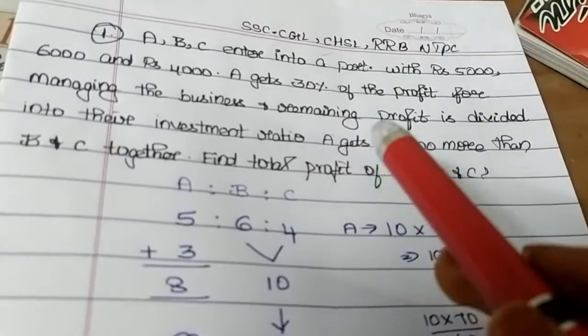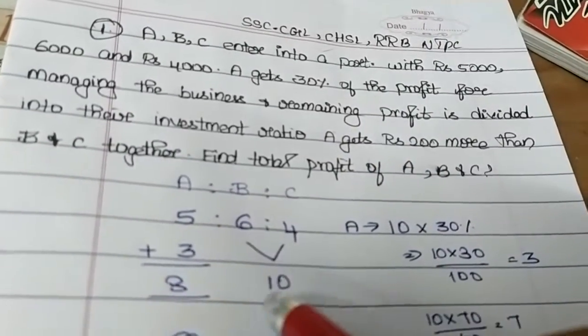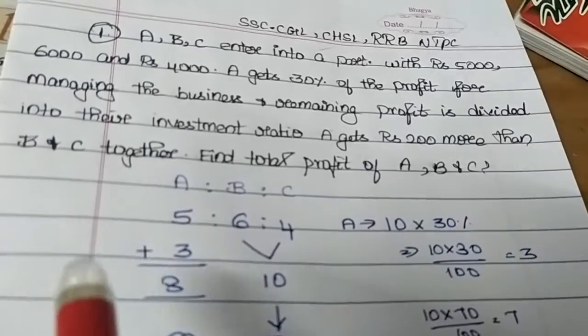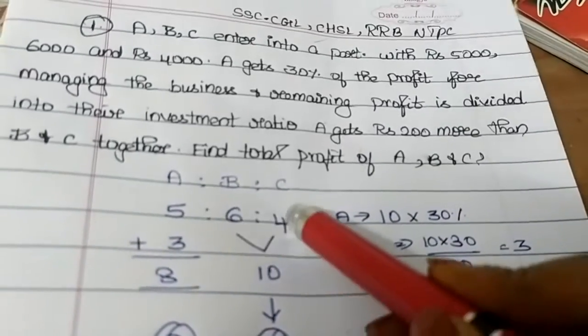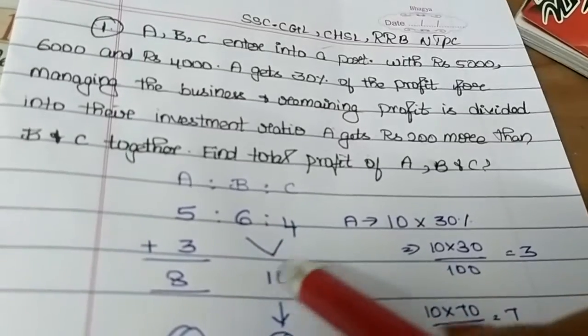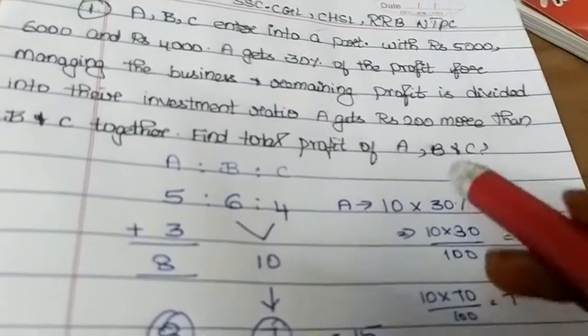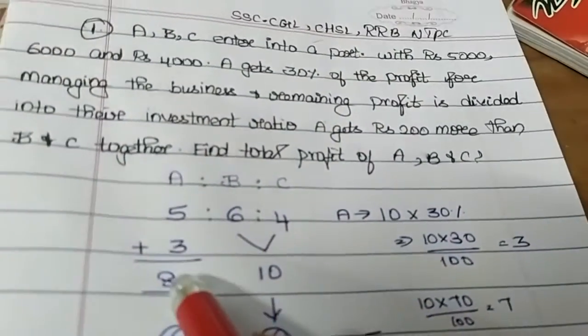So A gets 30% of the profit. Total A gets 30% extra profit. So B and C add. 6 plus 4 is 10. 30% of the profit is 3 parts. And 3 plus 5 is 8. Total for A is 8.